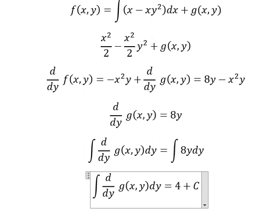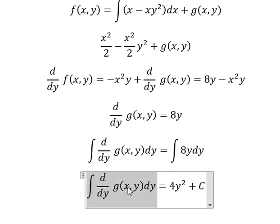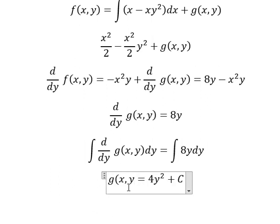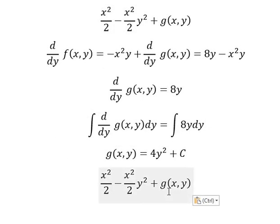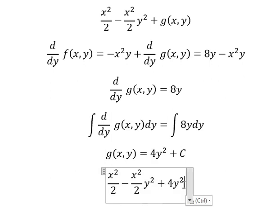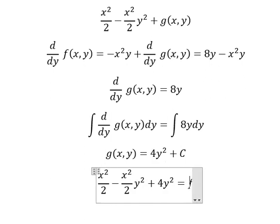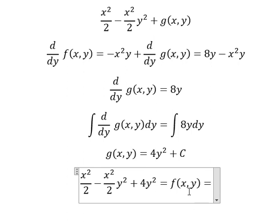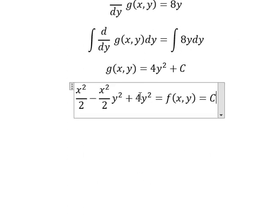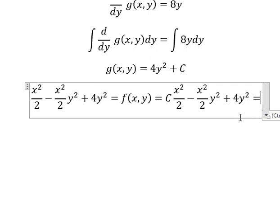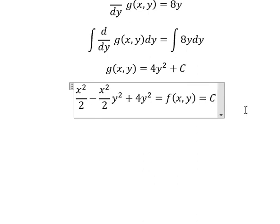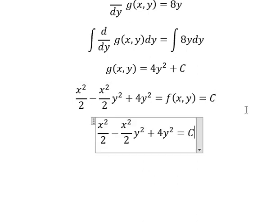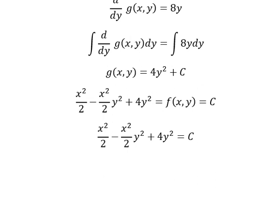Integrating gives g(y) equal to 4y² (from integrating 8y, giving 8 multiplied by y²/2). We substitute back: g(y) equals 4y². So we change g(y) into 4y², and the final answer is f(x, y) equal to C. This is the end — thank you for watching.